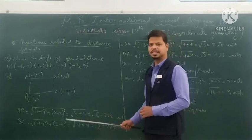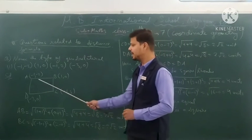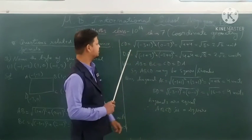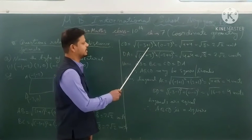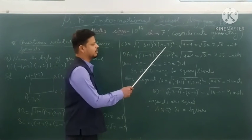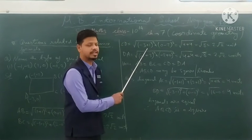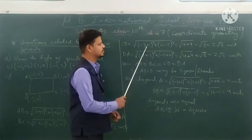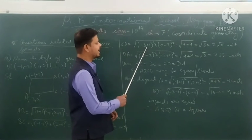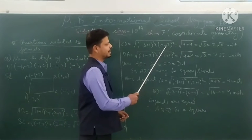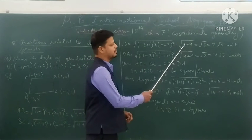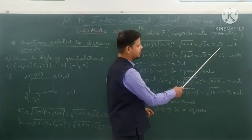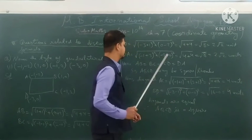Now we find CD using the distance formula: √[(−3−(−1))² + (0−2)²] = √[(−2)² + (−2)²] = √[4 + 4] = √8 = 2√2 units.